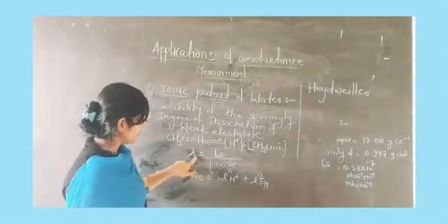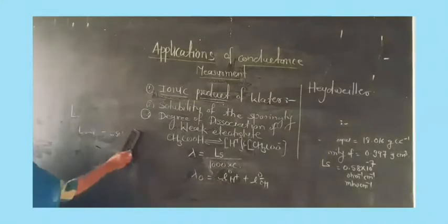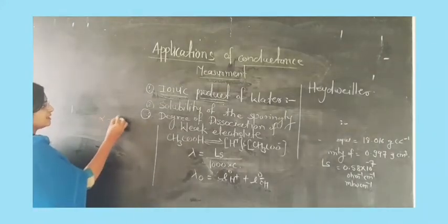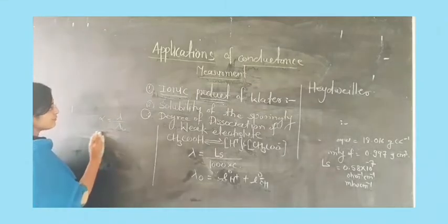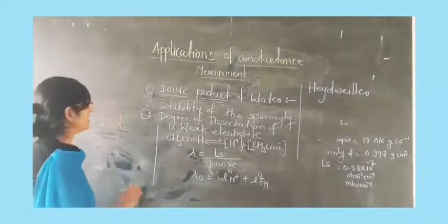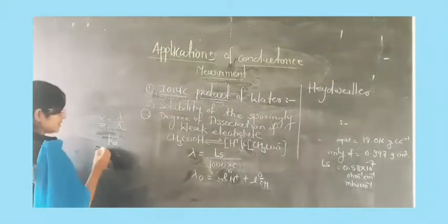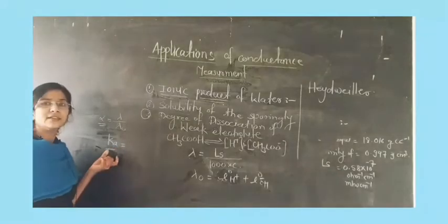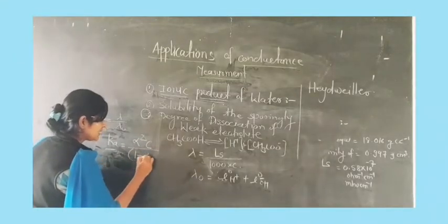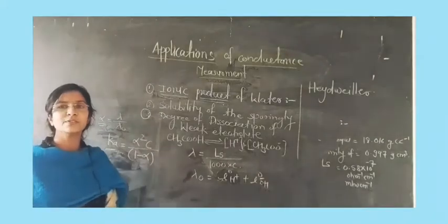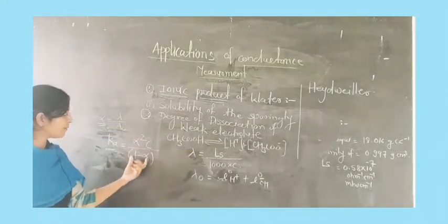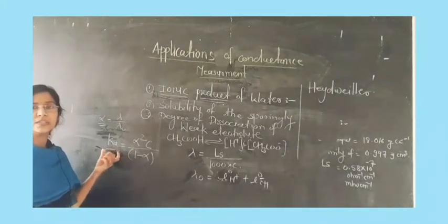After getting lambda and lambda_0, we calculate the degree of dissociation: alpha = lambda / lambda_0. Substituting the values gives us alpha. This alpha value can provide the dissociation constant of the weak acid, denoted by K, which equals alpha² × C divided by (1 − alpha). This equation gives us the dissociation constant of the acid.